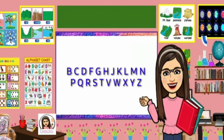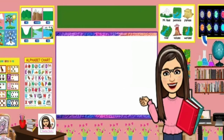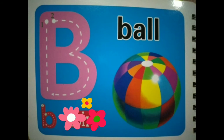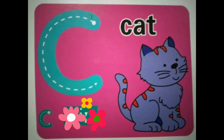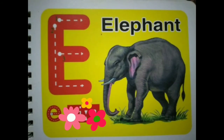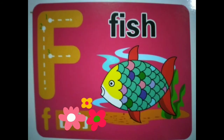Let's read the alphabet. A, Apple. B, Ball. C, Cat. D, Duck. E, Elephant. F, Fish.